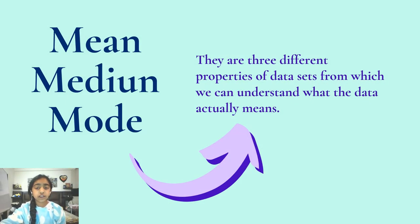There are three different properties of data sets from which we can understand what the data actually means. These three properties are mean, median, and mode.